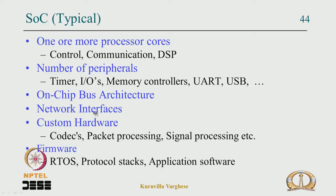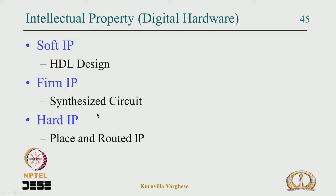A typical SoC also includes network interfaces such as Ethernet, Wi-Fi, or Bluetooth, custom hardware for packet processing and signal processing such as an H.264 or MPEG-4 decoder, and ultimately the software: a real-time OS, network protocol stack, and application software — all stored in flash memory within the chip.